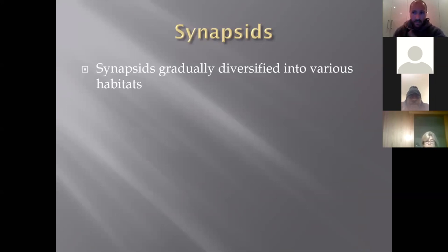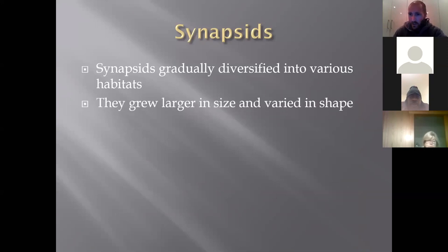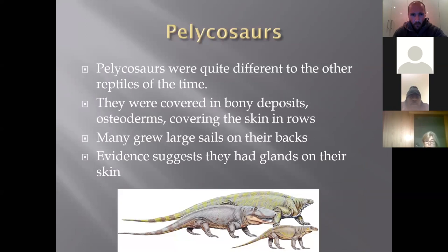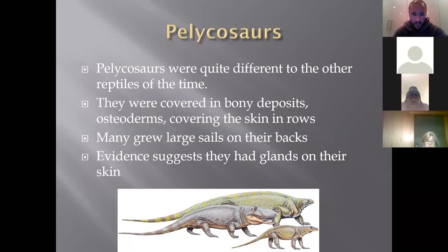Gradually over millions of years the synapsids diversified to various habitats, grew larger, varied in shape, filling different ecological roles and having different diets. Around 300 million years ago the first pelicosaurs began to appear. They were very different to other reptiles — covered in bony deposits called osteoderms, instead of overlapping scales. These bony little ridges shared a lot of the same physiological features as modern hairs, and we assume based on fossil evidence that this is where hairs actually evolved from — originally being protection, then becoming warmth.